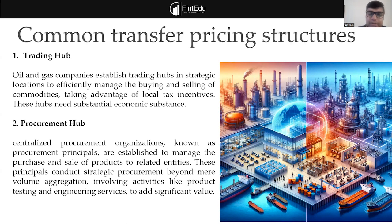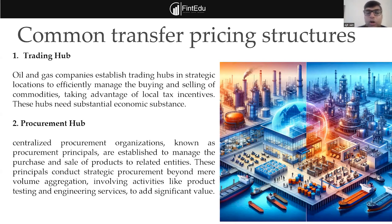If a trading hub is getting, say, 30% or 20% of the profit, does it have enough substance to justify that profit? When I say substance — do they have skilled people working on those activities? Are they taking critical decisions? From that perspective, it is important to do functional analysis or value chain analysis to understand who is contributing what. The second structure is the procurement hub — a centralized entity dealing with vendors and coordinating activities, creating efficiencies in the system.